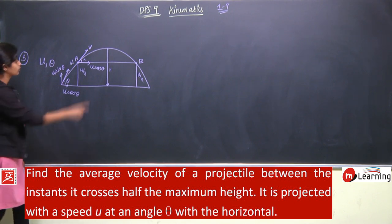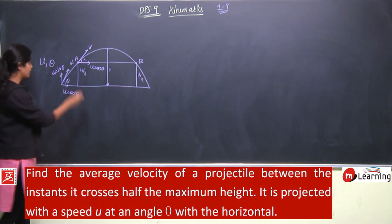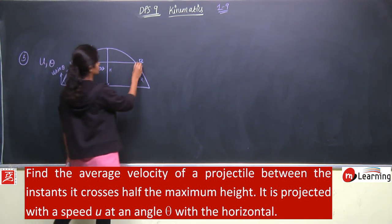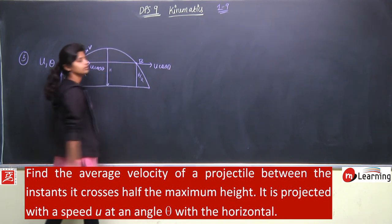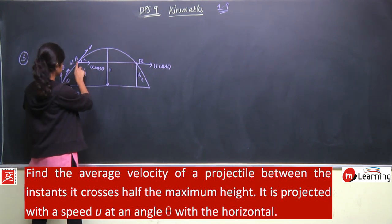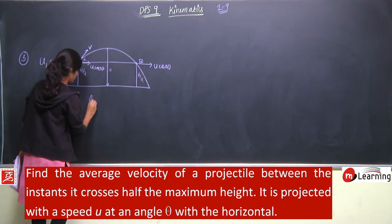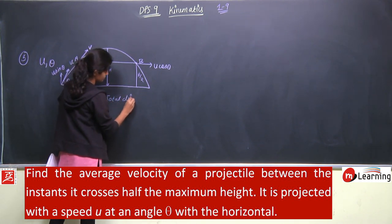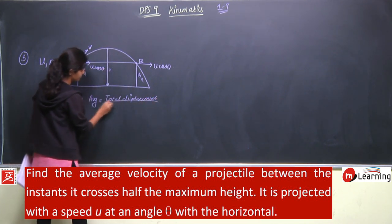So v cos alpha will be equal to u cos theta, because in the horizontal direction there is no acceleration. At every point the horizontal velocity is the same — it will be u cos theta. So from here to here, to calculate average velocity: average velocity is total displacement divided by total time.